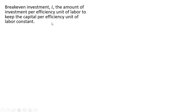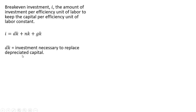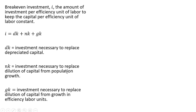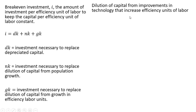Let's talk about breakeven investment, lowercase i — the amount of investment per efficiency unit of labor needed to keep capital per efficiency unit of labor constant. Here is the equation: dk is the investment necessary to replace depreciated capital; nk is the investment necessary to replace dilution of capital from population growth; and gk is the investment necessary to replace dilution of capital from growth in efficiency units of labor — that is, dilution from improvements in technology.